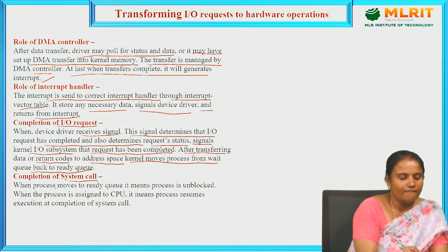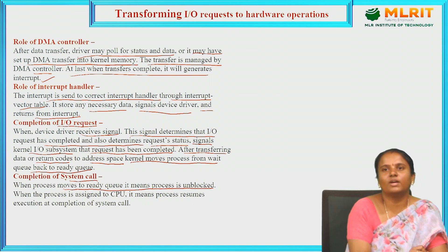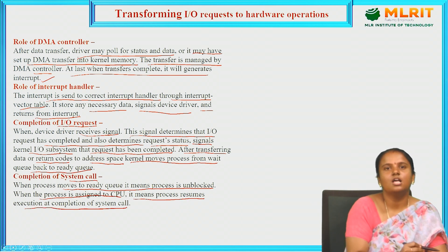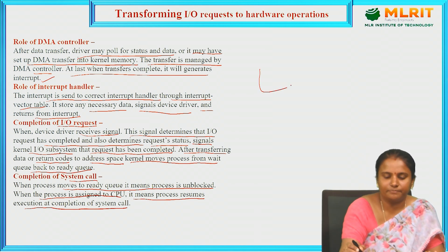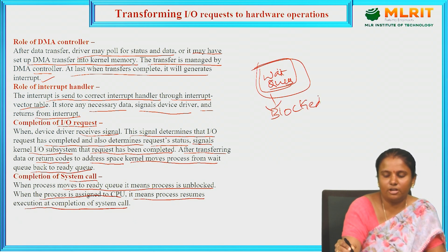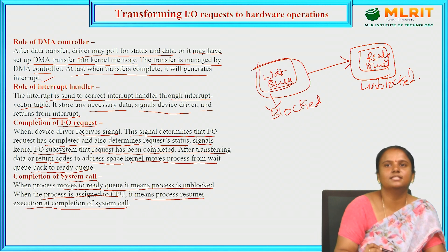Regarding completion of the system call: when the process moves to the ready queue, the process is unblocked — it was previously in the waiting queue. When the process is assigned to the CPU, the process resumes execution at the completion of the system call. So while in the waiting queue the process is blocked, and once moved to the ready queue it is unblocked and ready for execution.